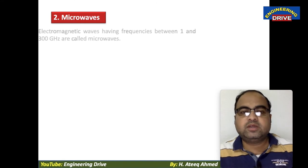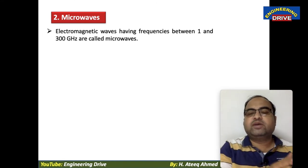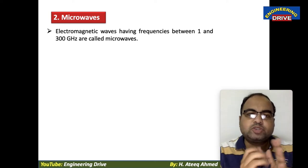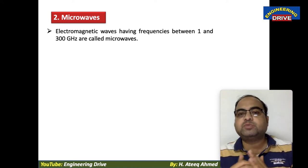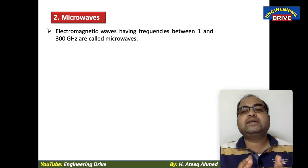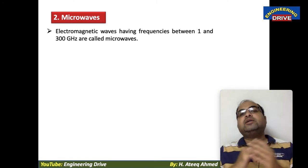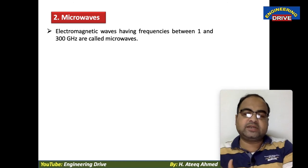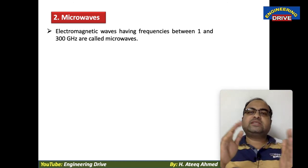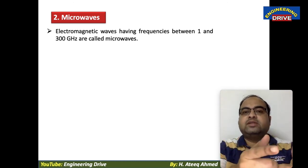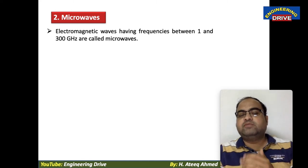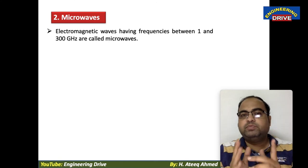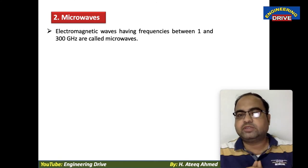Moving on to the second unguided medium: microwaves. To distinguish radio waves from microwaves we look at frequency. Electromagnetic waves having frequencies between 1 GHz and 300 GHz are called microwaves. If the frequency range is smaller, they are radio waves; if larger, they are microwaves.